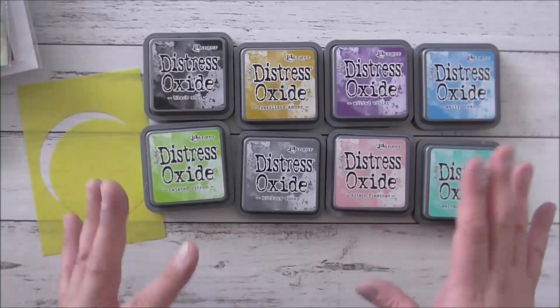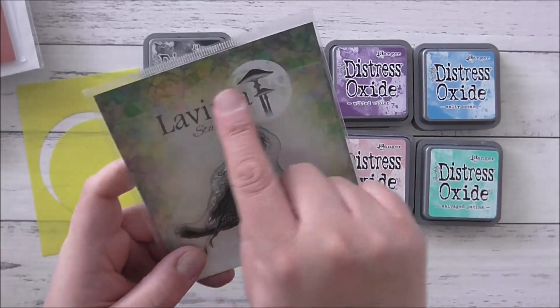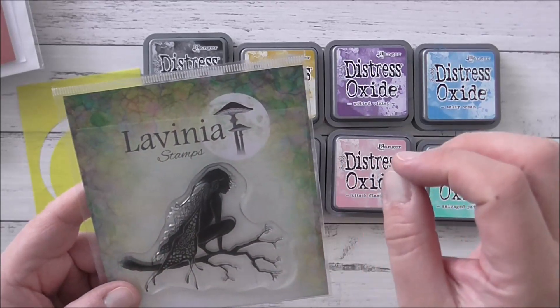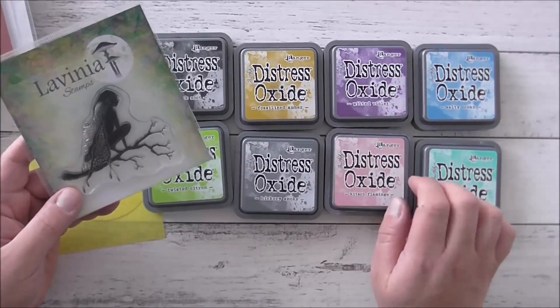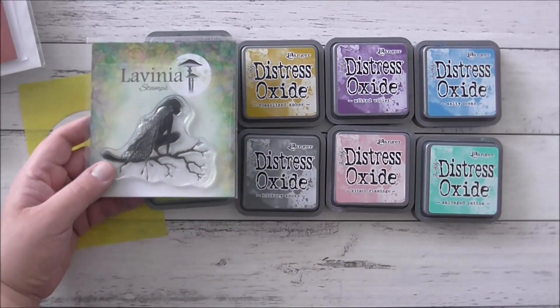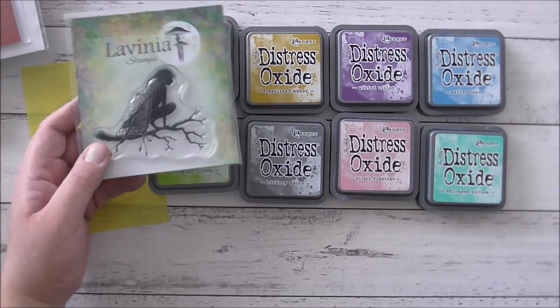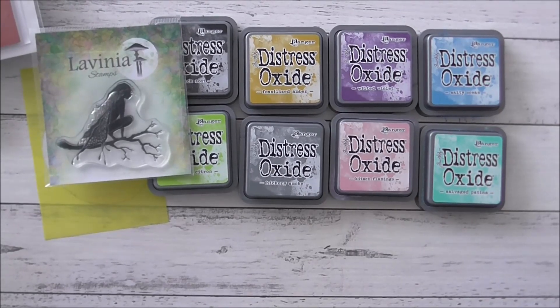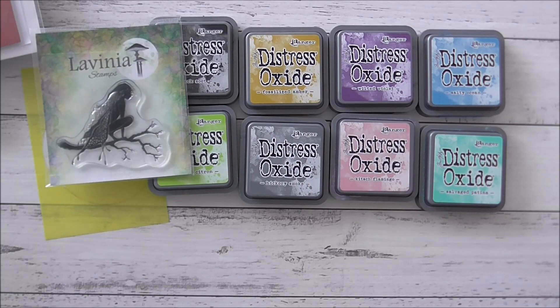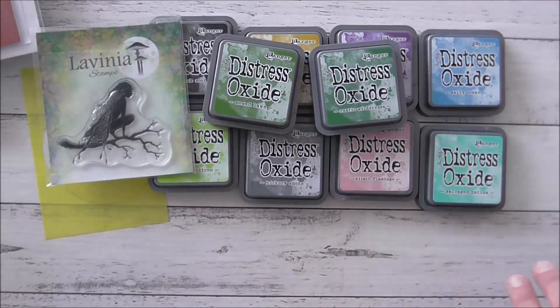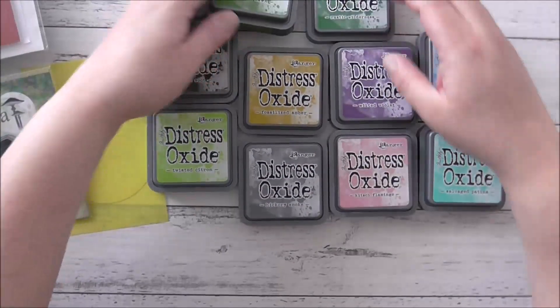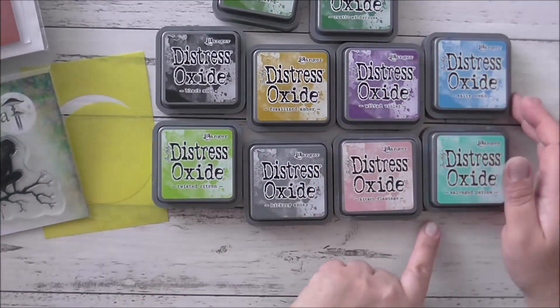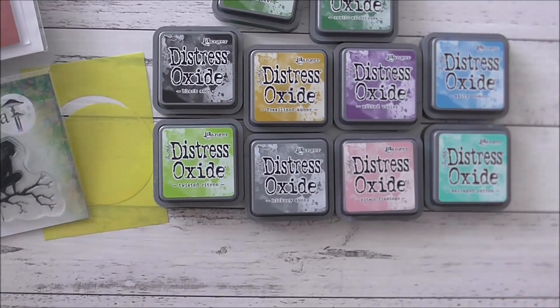I've pulled out some colors that I'd like to use - I'm being inspired by this image. I love the colors there: pink, purple, yellow, green. I'll also pick a darker green, maybe some Mowed Lawn and Rustic Wilderness. The Distress Oxide colors I'm using are Mowed Lawn, Rustic Wilderness, Black Soot, Fossilized Amber, Wilted Violet, Salty Ocean, Salvage Patina, Kitsch Flamingo, Hickory Smoke, and Twisted Citron. It's a lot of colors, but we'll see how it works out.